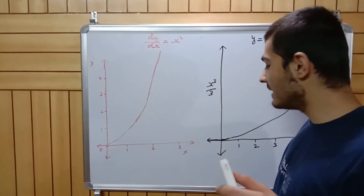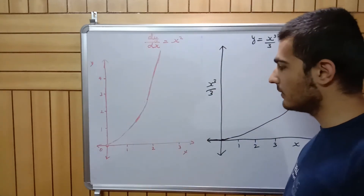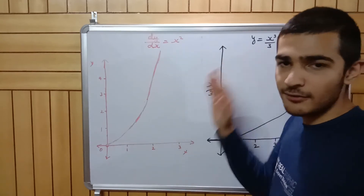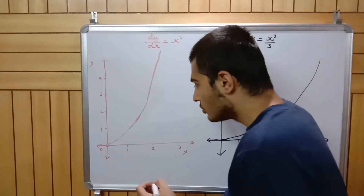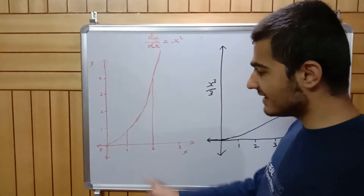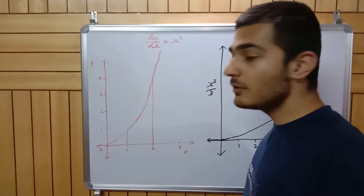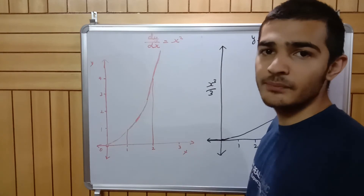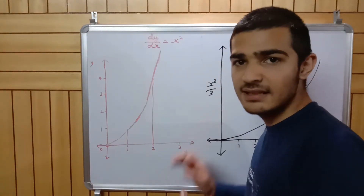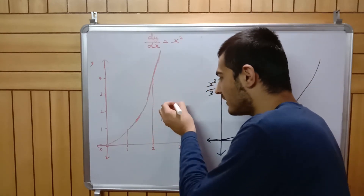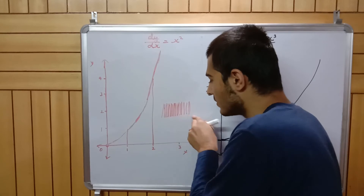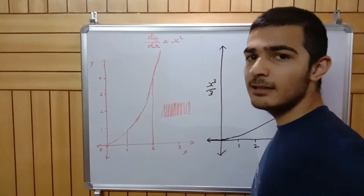That is a very important point to keep in mind. This is the graph of x squared. Now, forget the derivative part for a moment and focus on finding the area. If I draw two boundaries at x equals one and x equals two, we get a shape whose area we're trying to find. What we had done previously was divide the whole thing into many rectangles.